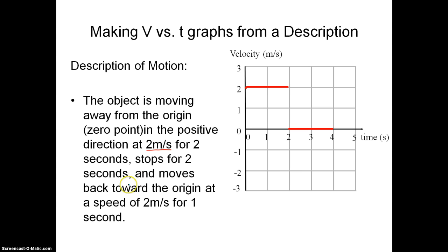It then says it moves back towards the origin at a speed of 2 meters per second for 1 second. So if it's going back towards the origin, the object is now moving in the negative direction, which means it has to have a negative velocity. If it's moving at 2 meters per second, that means its velocity will be negative 2 meters per second. And there's your finished velocity versus time graph.